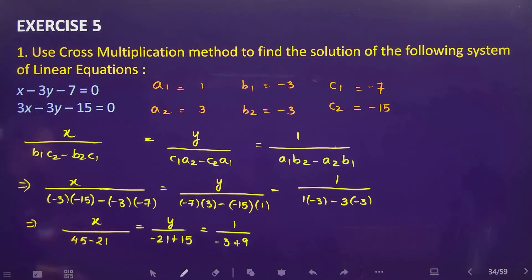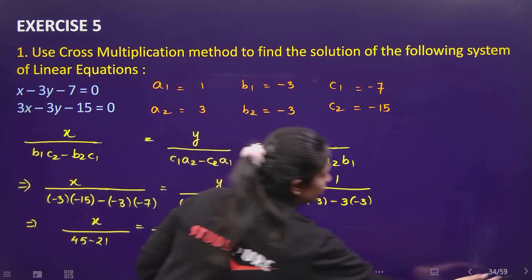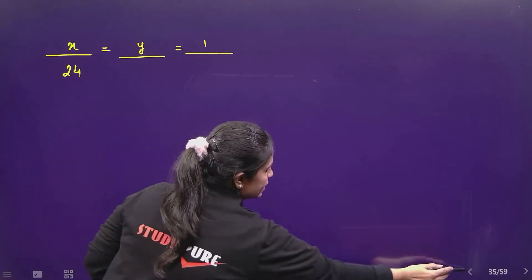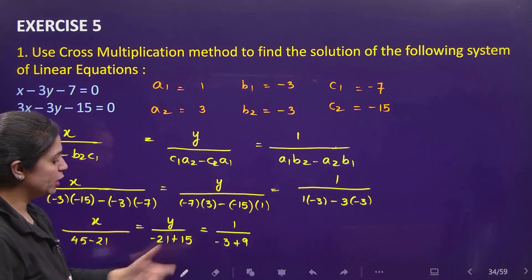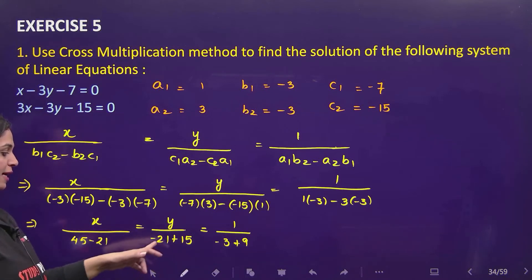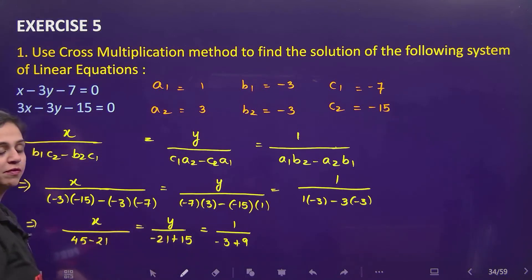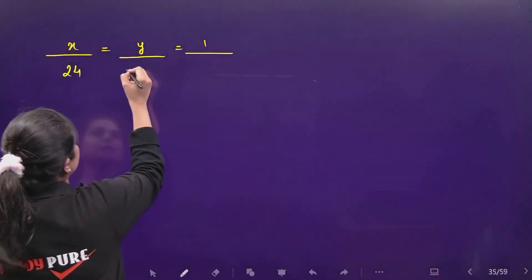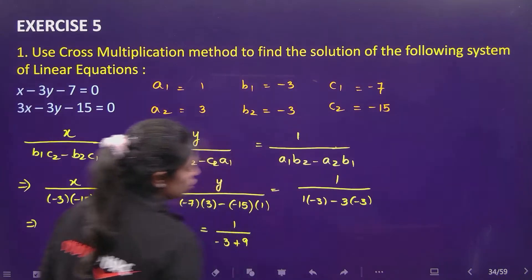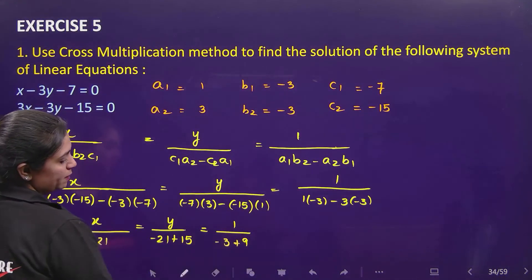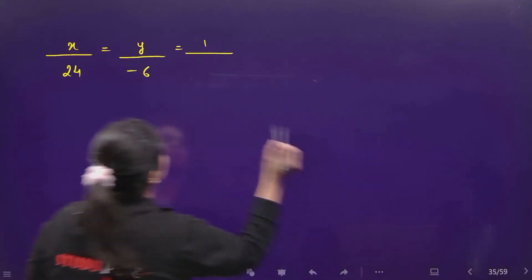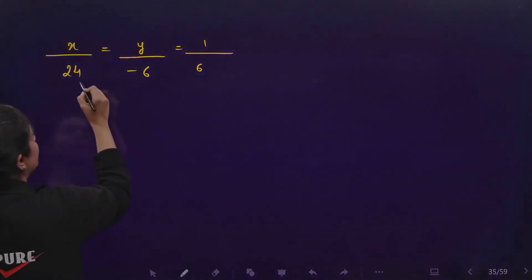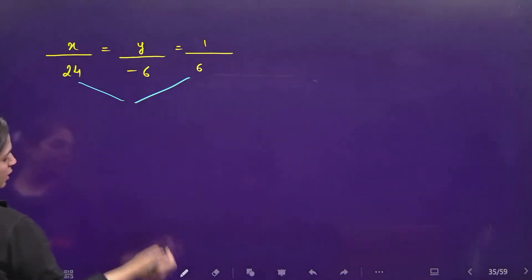This gives us: x over 45 minus 21, which is 24. For y, the denominator is minus 21 plus 15; since 21 is the larger number, 21 minus 15 gives 6, so this becomes minus 6. And for 1, minus 3 plus 9 is positive 6.